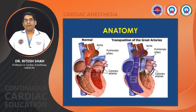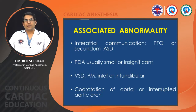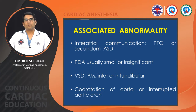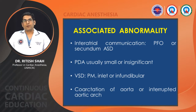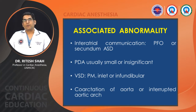There may be associated abnormalities: PFO or secundum ASD is more common; PDA is usually small or sometimes insignificant. VSD may be present — it may be perimembranous, inlet, or infundibular. Coarctation of aorta or interrupted aortic arch may be present. If TGA comes along with VSD, chances of other anomalies are greater.